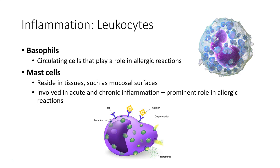Two other cells that play a role in allergic reactions are basophils and mast cells. Mast cells also play a role in acute and chronic inflammation, primarily at the mucosal surfaces. Mast cells hold histamine and, in response to a signal, will rapidly release it — causing sneezing and itchy, watery eyes during an allergic reaction. This is why antihistamine drugs like Benadryl are often taken.